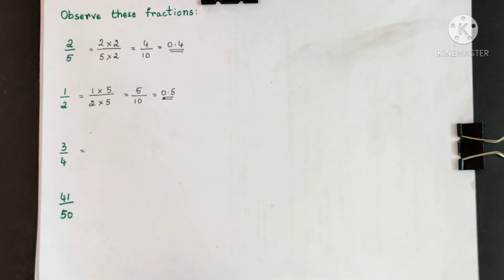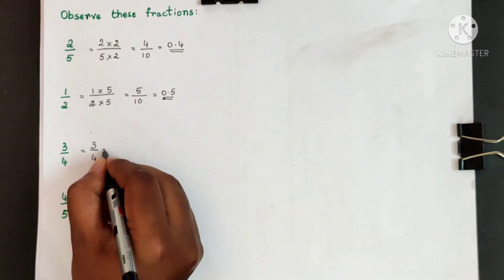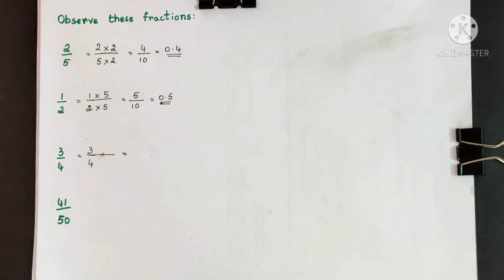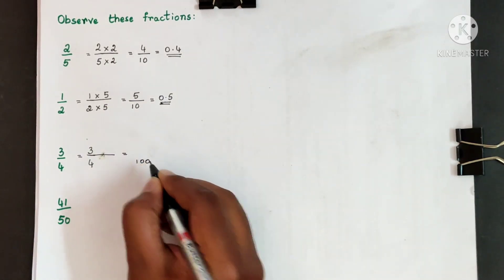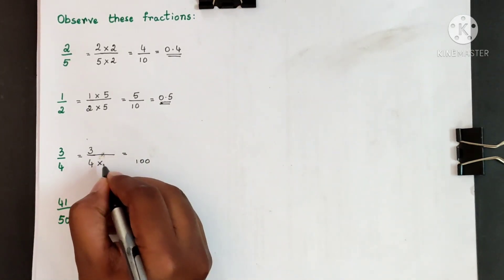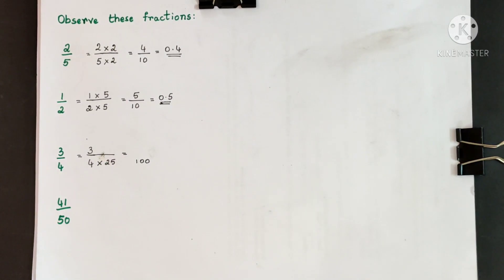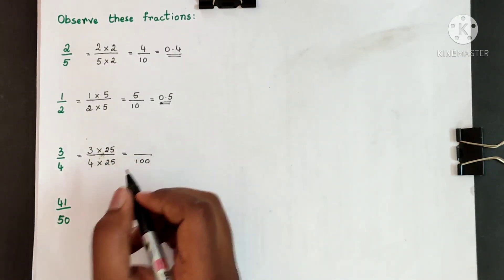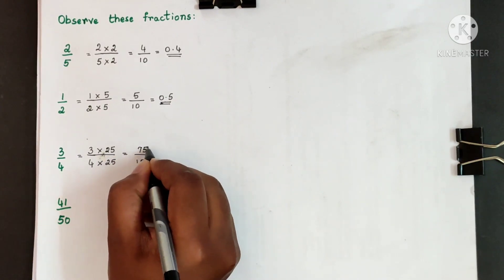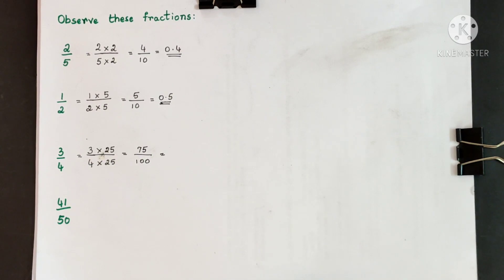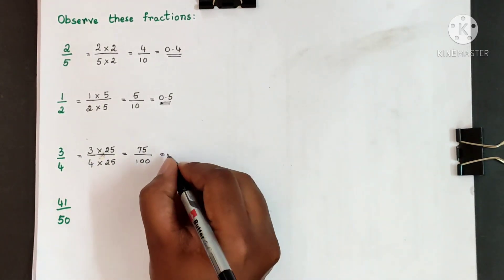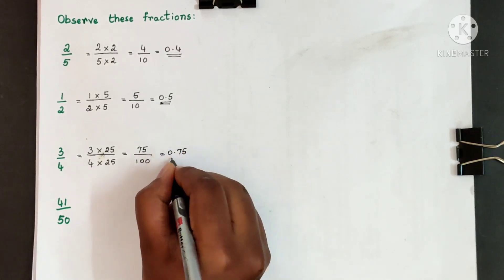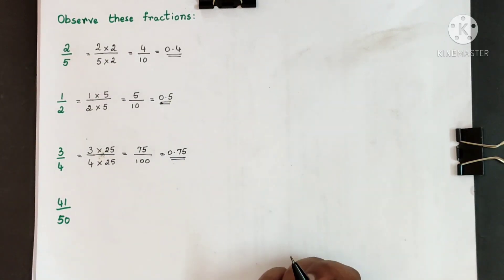3 fourths — how do you write 3 fourths in decimal fraction? So 4 how many times gives you 10? We do not get 10 when we multiply 4 by any number: 4 ones are 4, 4 twos are 8, 4 threes are 12 — we do not get 10. So we are left with 100. 4 how many times gives you 100? As we saw earlier, 25 fours, or 4 twenty-fives, gives you 100. Multiply the numerator also by 25. 25 times 3 gives you 75. So 75 hundredths is written in decimal fraction as 0.75. So 3 fourths is written as 0.75 in decimal fractions.